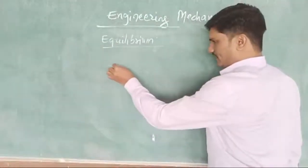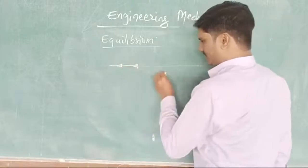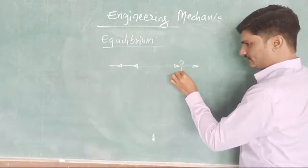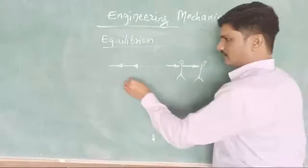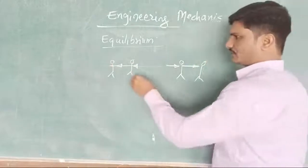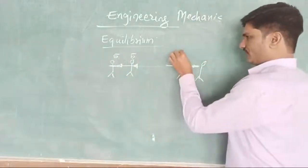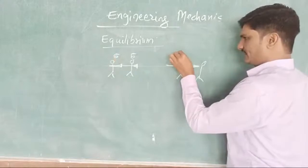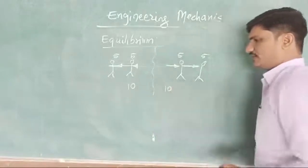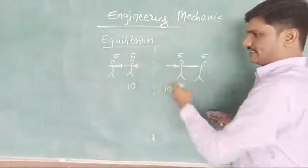For example, if there is a tug of war — when two guys are pulling from the net, one from the left and one from the right — two forces are active. Suppose the first person is applying five newtons and the right person is also five newtons. So in the right side and left side, both are in equilibrium — both 10 newtons forces are applied. It is in the equilibrium condition.